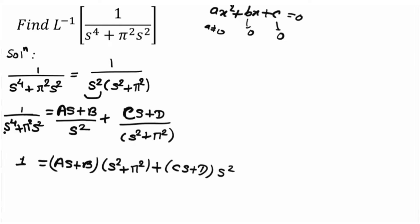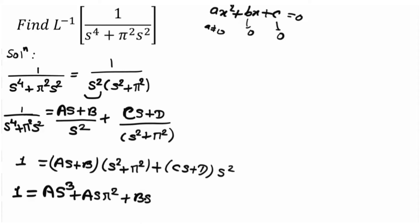After cross multiplication, the denominator terms cancel and we get 1 equals the expanded right-hand side. Opening the brackets, this gives us: A·s cubed plus A·s·pi squared plus B·s squared plus B·pi squared...